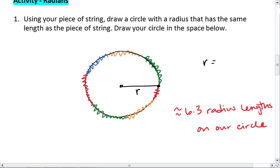Sorry, I don't know where the video cut off. If we were to cut our circle and lay this circumference out flat, it would be equal to 6.3 radius lengths, approximately.